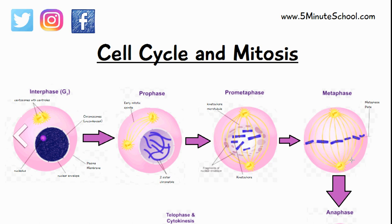In the other stages there are things like DNA replication, the cell resting, and in some cases regulatory checks to see if everything is okay for mitosis to occur. We're going to talk about the cell cycle as a whole in another video, and in this video we're going to talk about exactly what happens in mitosis.